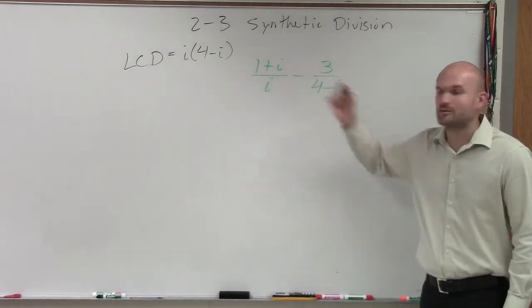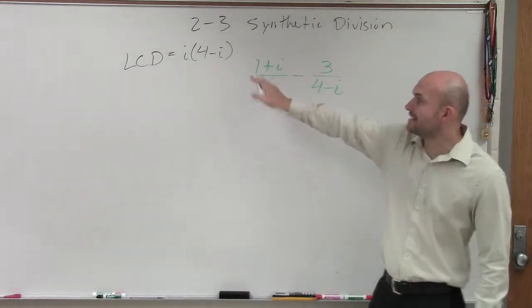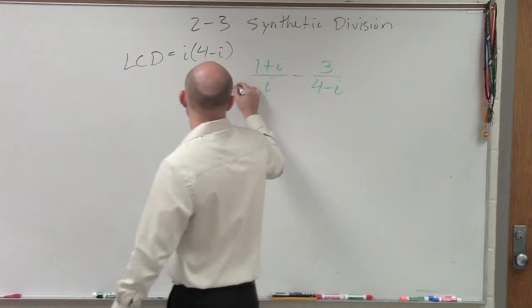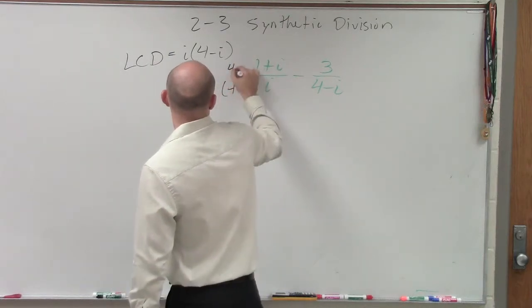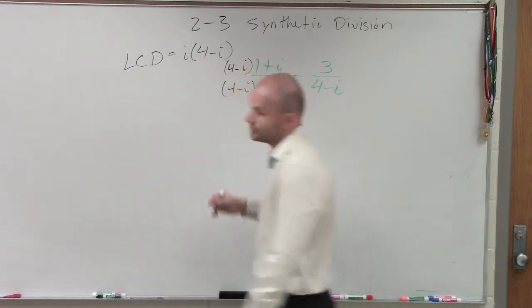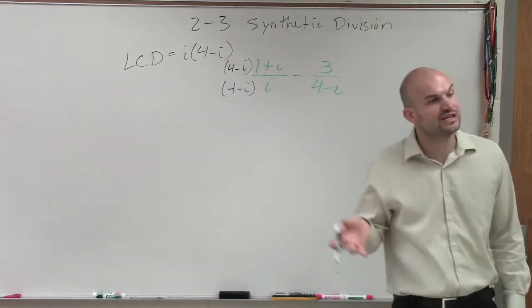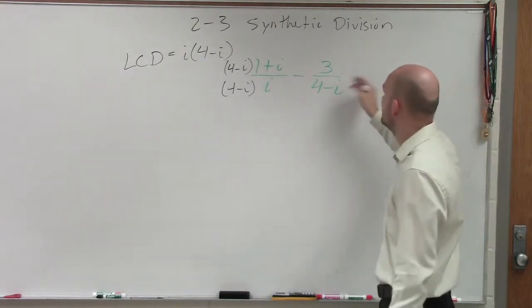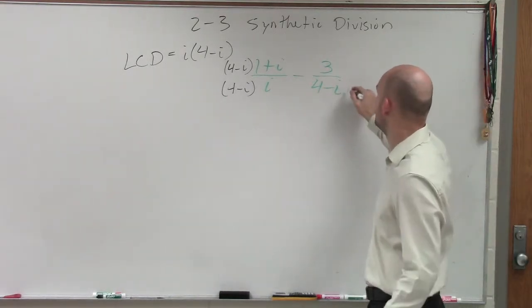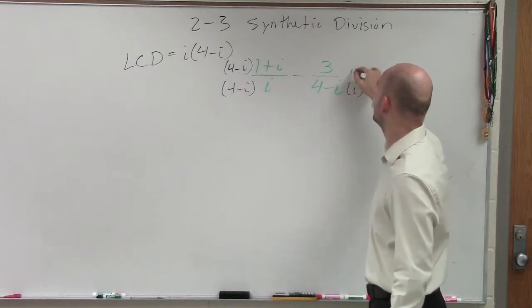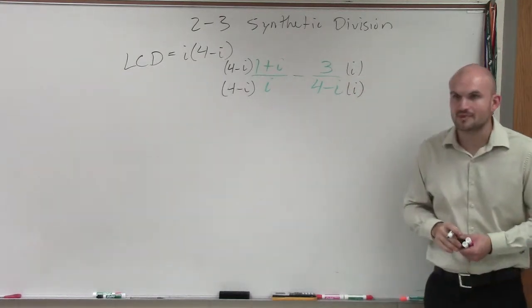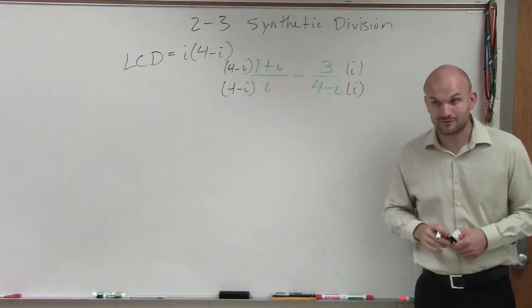So, therefore, to get them to be common denominators, to get i to be four minus i, I need to multiply by four minus i on the top and the bottom. We need to make sure you multiply on the top and the bottom to produce equivalent fractions. Over here, to get my denominator, I'll multiply by i on the top and the bottom. So, now we have some multiplying to do.